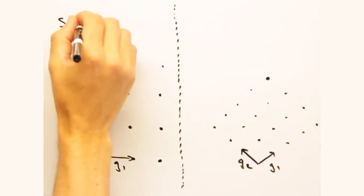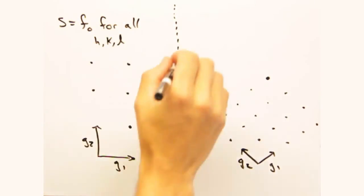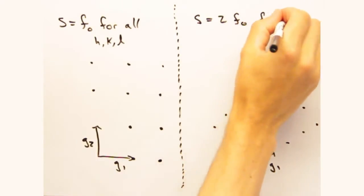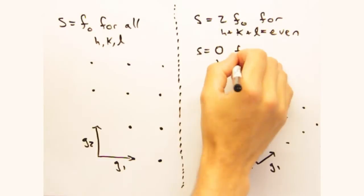For the normal square cell with one atom at each lattice point, we found that the structure factor s equals f0 for all hkl, so that we should observe peaks at every lattice point as shown by the x.